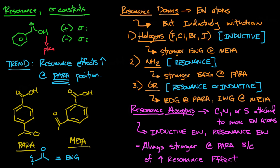If you have a positive Hammett constant, that means the pKa goes down. If you have a negative Hammett constant, the pKa goes up. An easy way to remember this: positive Hammett constant means a stronger acid, lower pKa, higher Ka. Place emphasis not on the actual pKa value, but on the strength of the acid. Similarly, a negative Hammett constant means the pKa goes up — you're decreasing the strength of the acid.